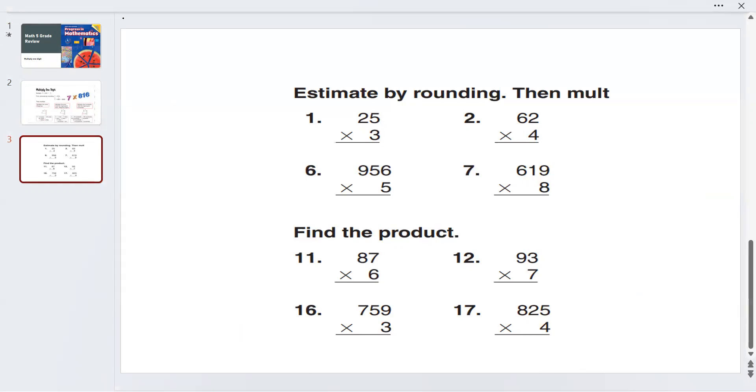First, we need to round: 25 times 3 is going to be 30 times 3, which is 90. Let's multiply: 3 times 5 is 15. 15 ones: we write 5, and 1 ten goes up. Then 3 times 2 is 6, plus 1 is 7 tens. 75 is close to 90, so the answer is reasonable.